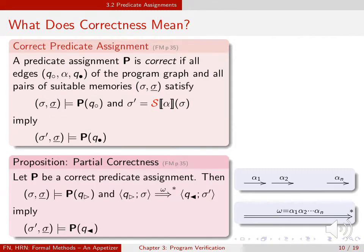When we have a correct predicate assignment we can be sure that whenever we have a complete execution sequence of the program, and the original concrete memory together with the virtual memory satisfies the predicate at the initial node, then the final concrete memory together with the virtual memory satisfies the predicate at the final node.